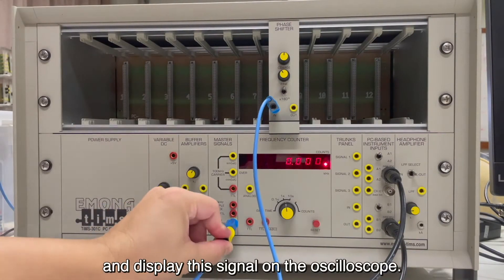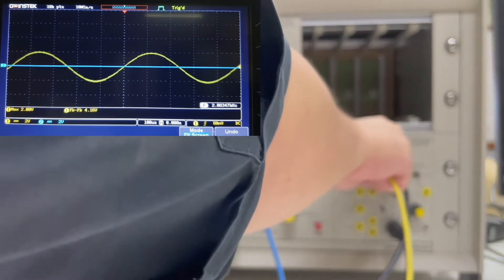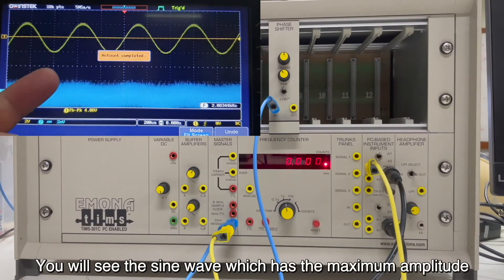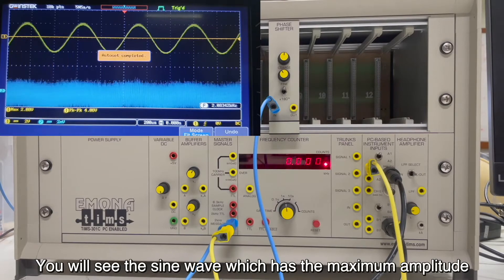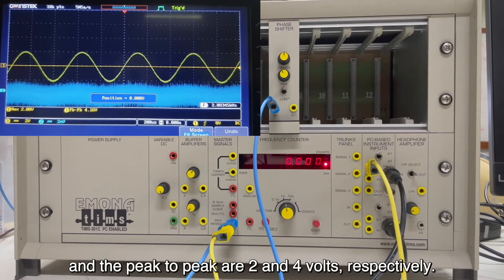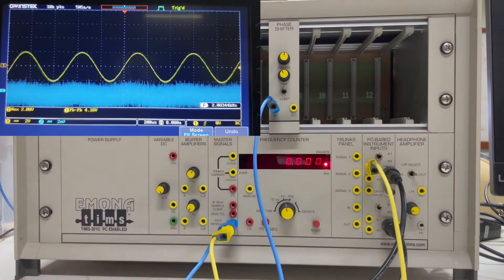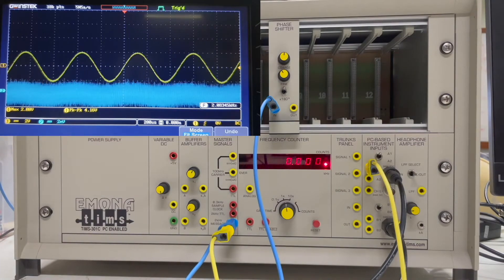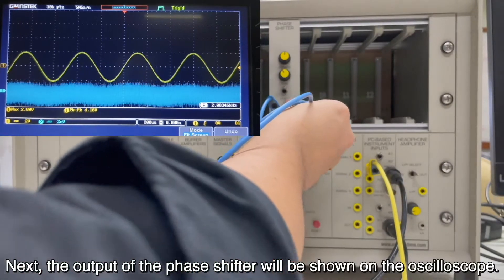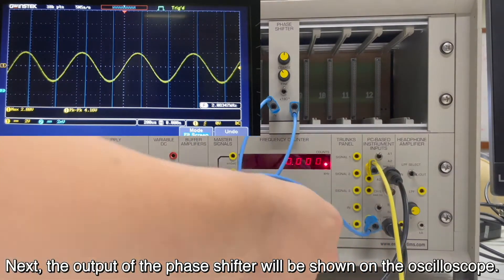And display this signal on the oscilloscope. You will see the sine waves which have the maximum amplitude and the peak to peak are 2 and 4 volts respectively. Next, the output of the phase shifter will be shown on the oscilloscope.